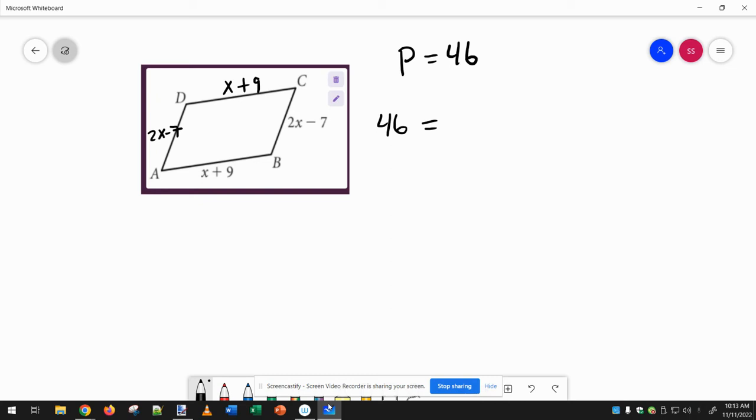So x plus x plus 2x plus 2x is 6x, and then 9 plus 9 is 18, and then negative 7 plus negative 7 is negative 14. So if I do 18 minus 14, that's 4.